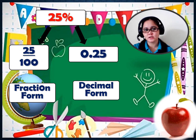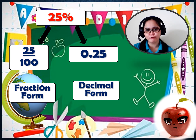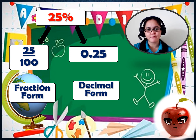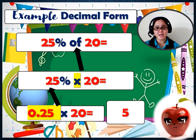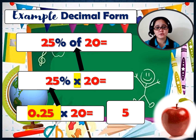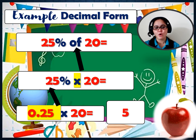For 25% again, we can use fraction form — 25 over 100 — or decimal form — .25. Example using decimal form: 25% of 20. First, change 'of' into times, so we have 25% times 20. Next, change the percent into decimal form: .25 times 20. The answer is 5. So .25 times 20 equals 5.